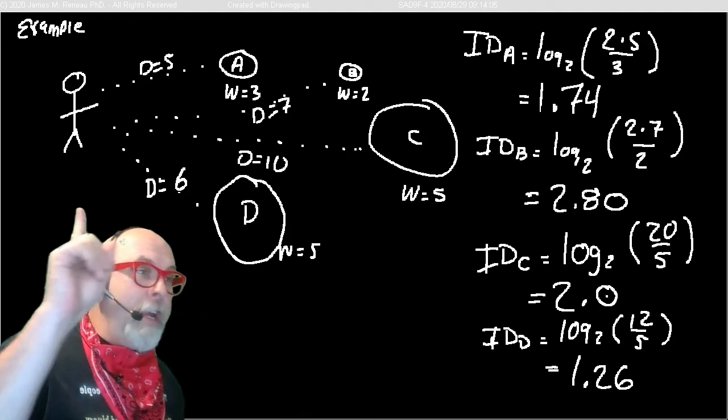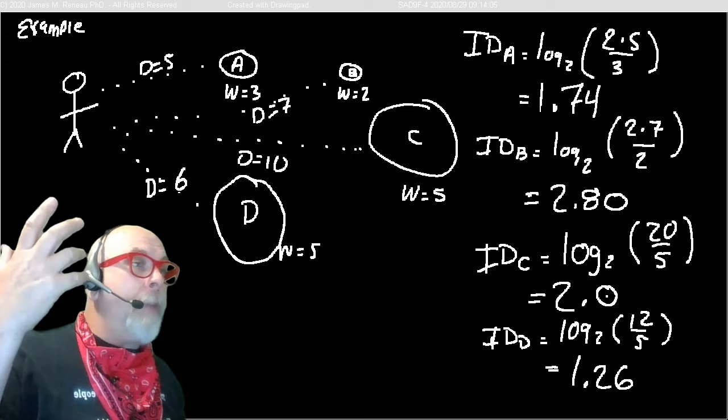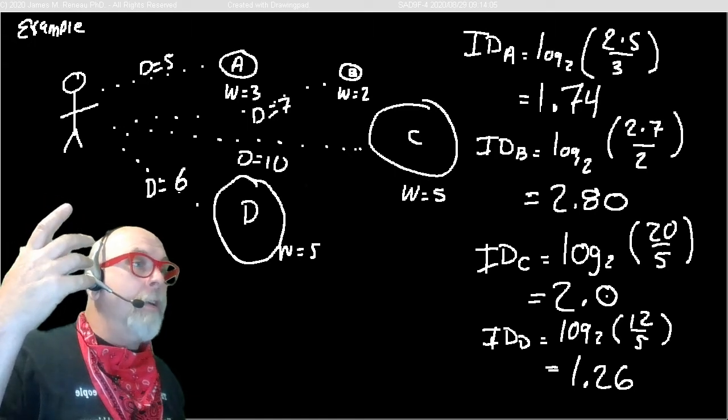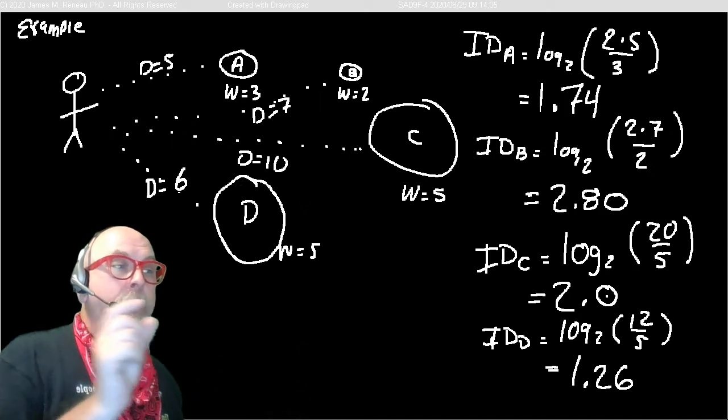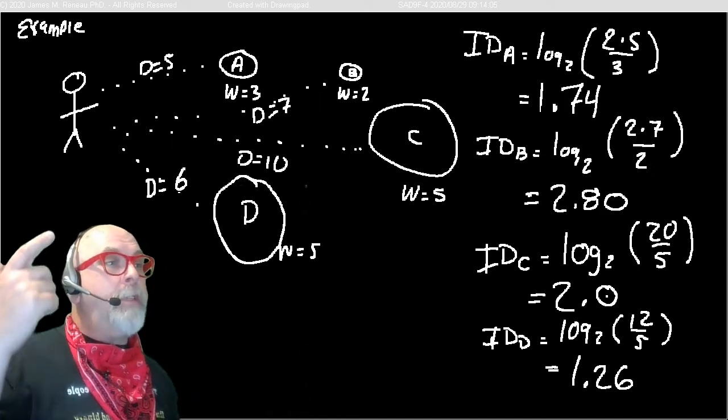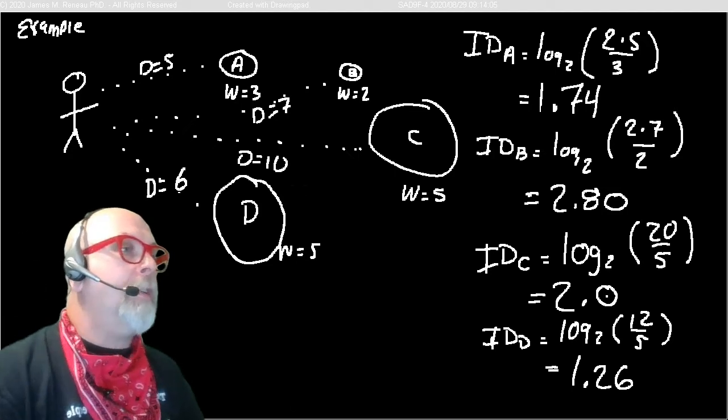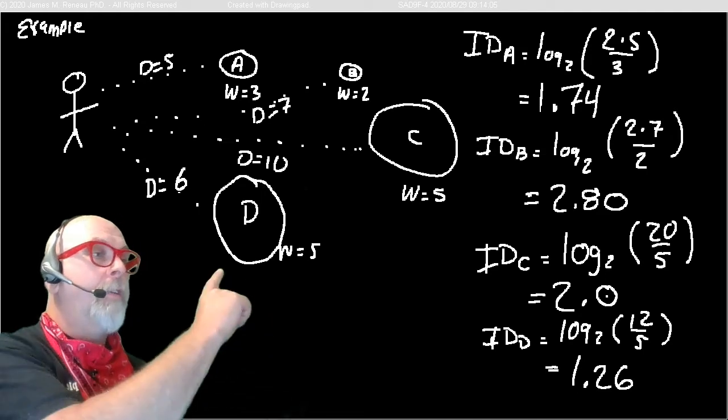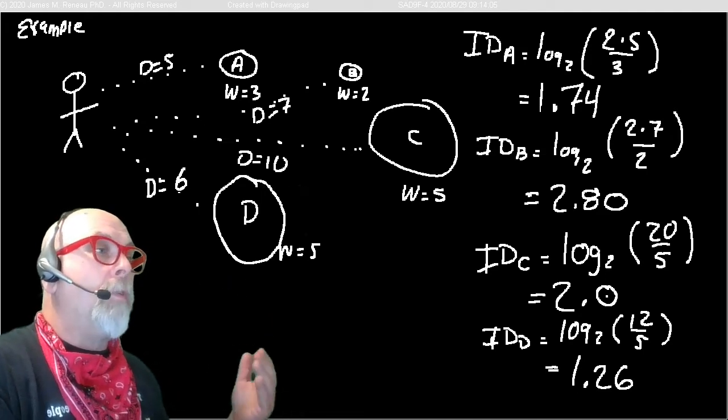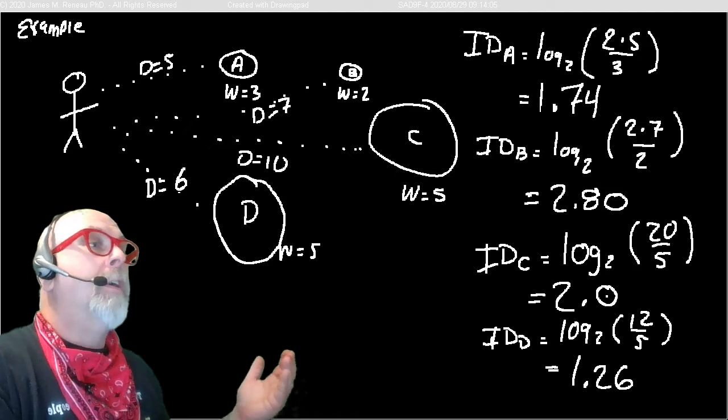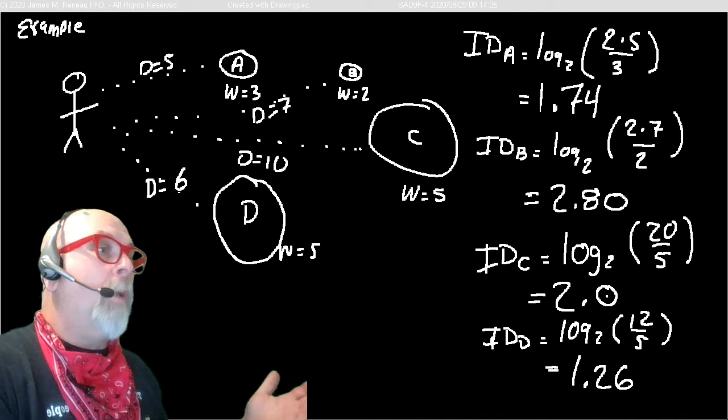For instance, here's an example. Our stick figure here needs to pick up these four objects. Object A, object B, object C, and object D. Object A has a width of three units and is five units away. You can see I've got D and W labeled for each of the units. And the index of difficulty, then, for object A would be 1.74, or the logarithm base 2 of 2 times 5, twice the distance, divided by the width. So that would be 1.74.